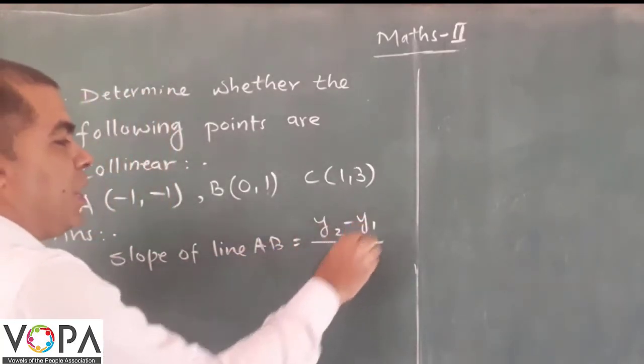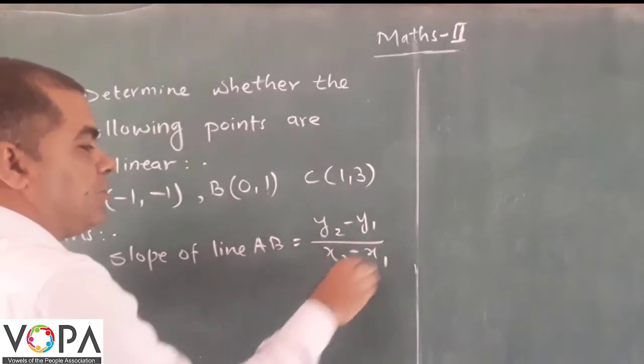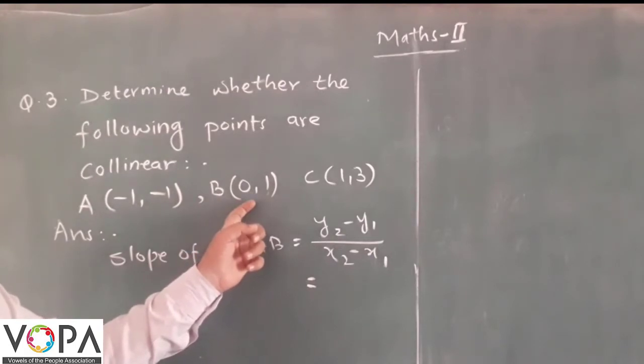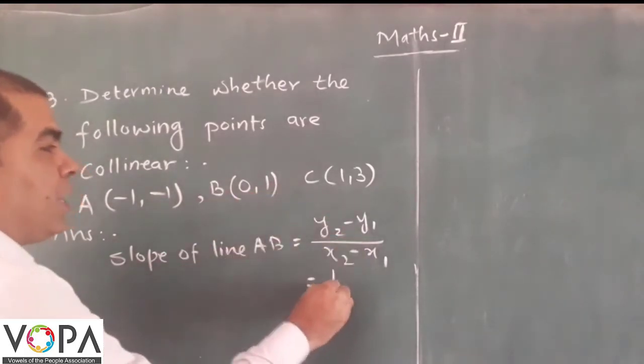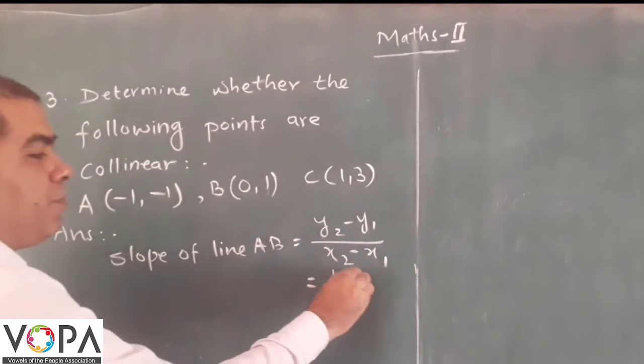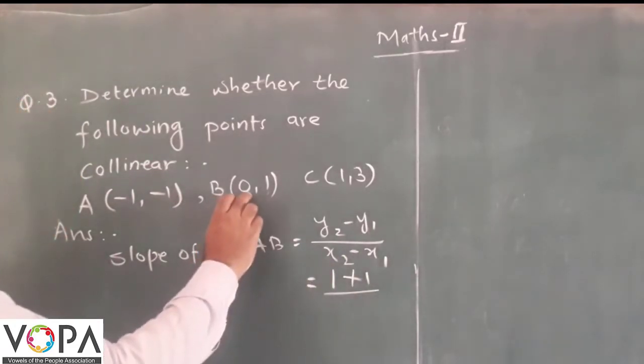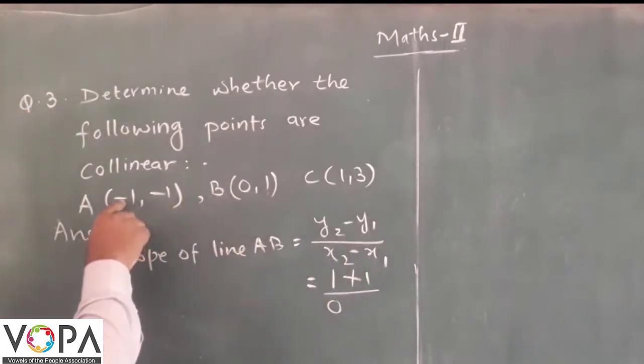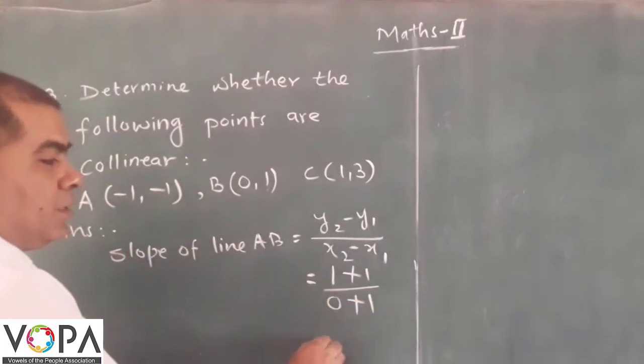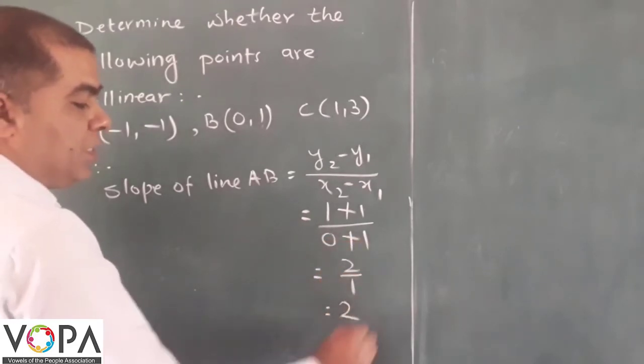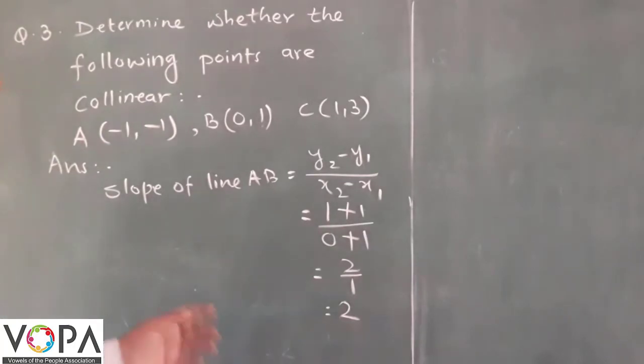The slope formula is y2 minus y1 over x2 minus x1. Here the coordinates of A are x1, y1 and coordinates of B are x2, y2. Now y2 is 1 and y1 is -1, so that will be 1 minus -1 which is 1 plus 1. Similarly, we have 0 minus -1, that will be 0 plus 1. Now 1 plus 1 is 2, and 0 plus 1 is 1, so the slope is 2 over 1, which is 2.